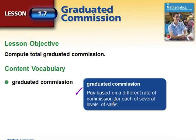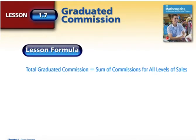You get a different percentage at different levels of your sales, and then we're going to total that graduated commission by adding all of your levels together. So our total graduated commission is going to be the sum of commissions for all levels. Yesterday we just calculated one commission and added that maybe to the salary. Today we're going to have multiple levels.